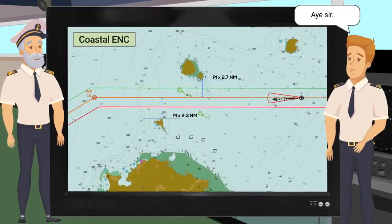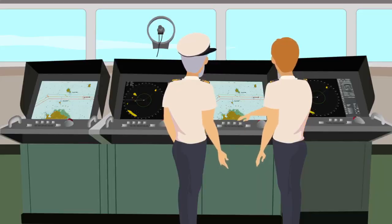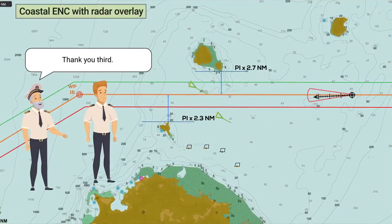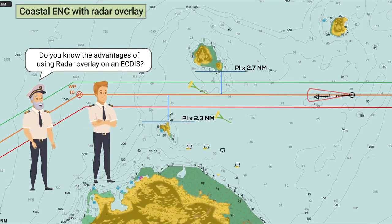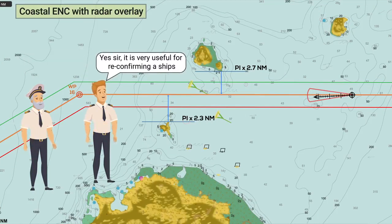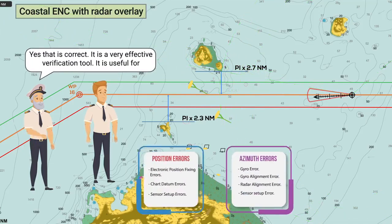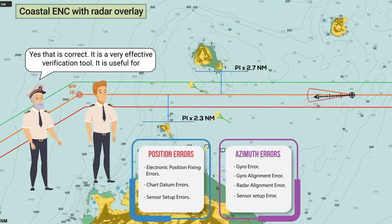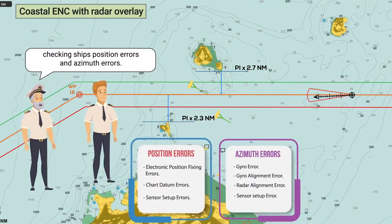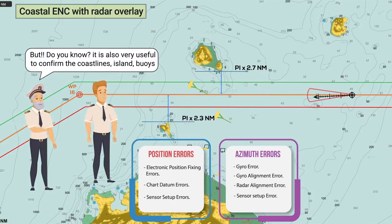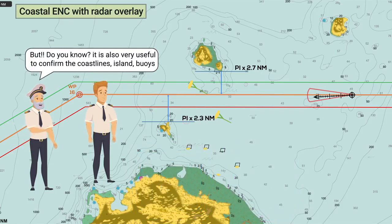Aye sir. Here you go, sir. Thank you, Third. Do you know the advantages of using radar overlay on an ECDIS? Yes sir, it is very useful for reconfirming a ship's position by range and bearing on an ECDIS. That is correct. It is a very effective verification tool. It is useful for checking ship's position errors and azimuth errors.